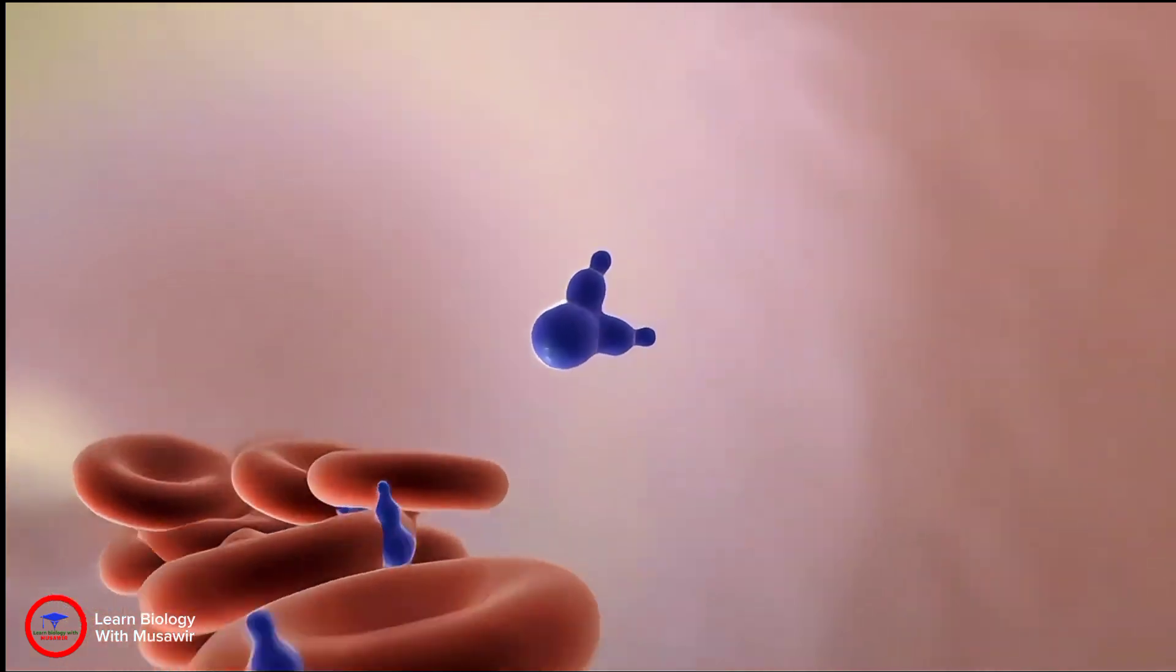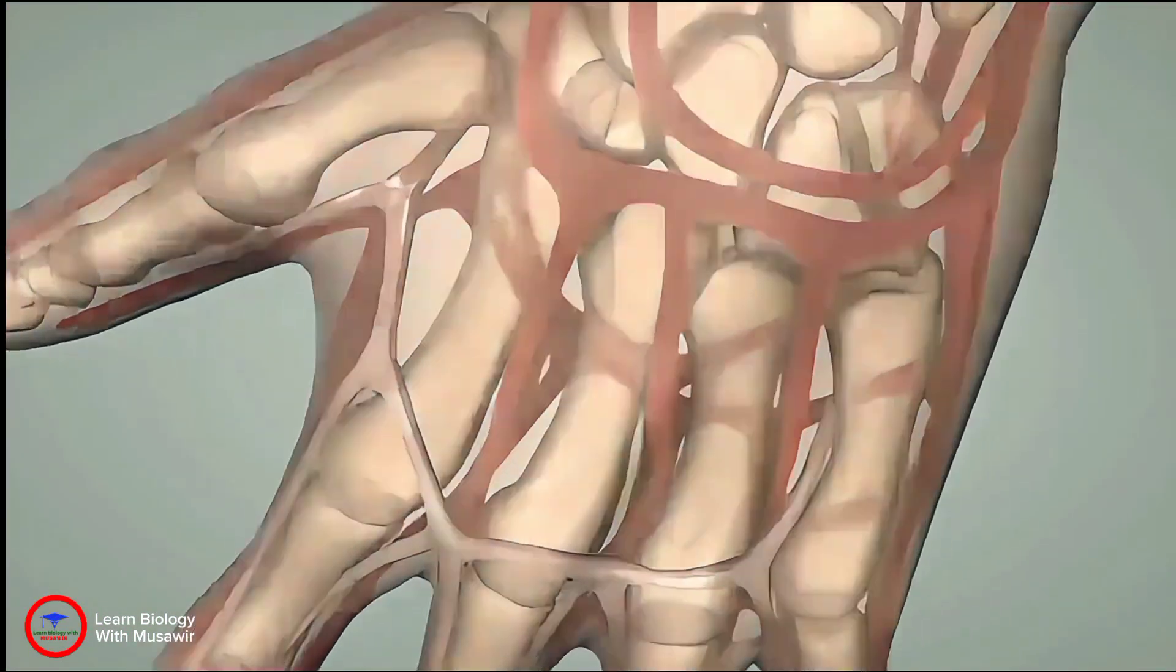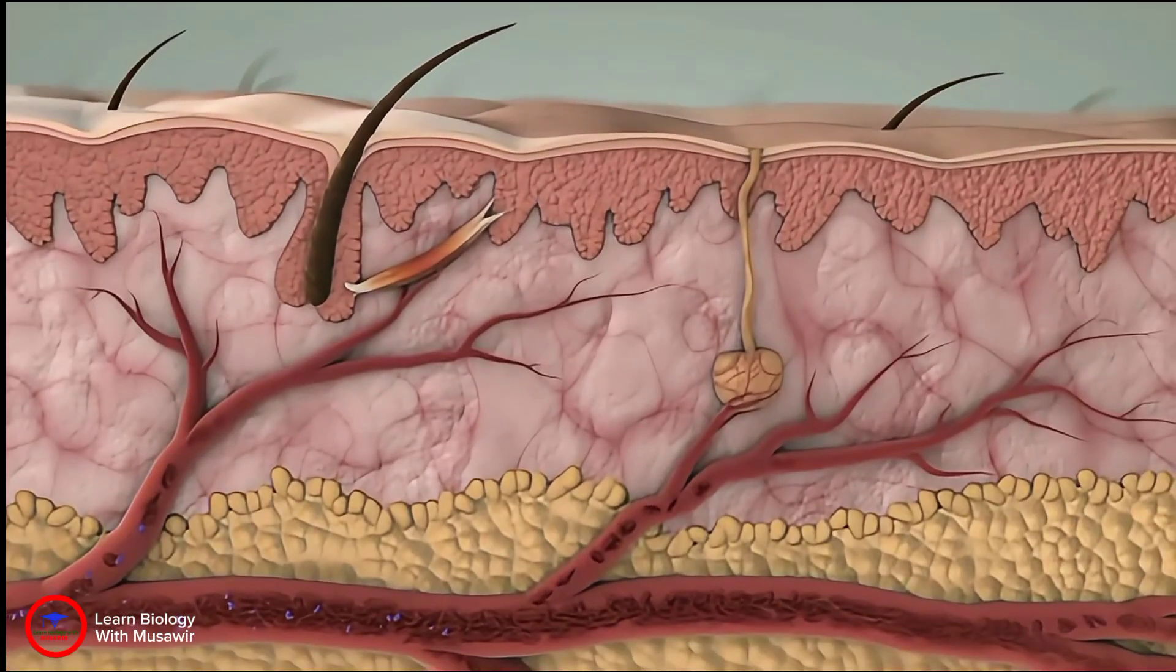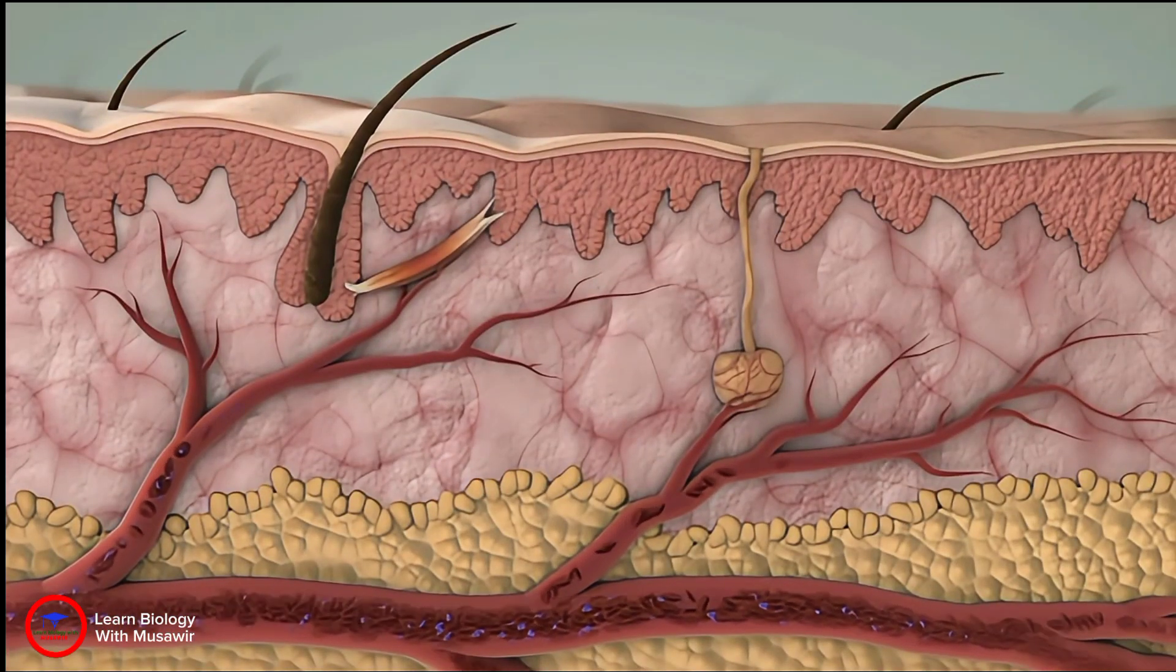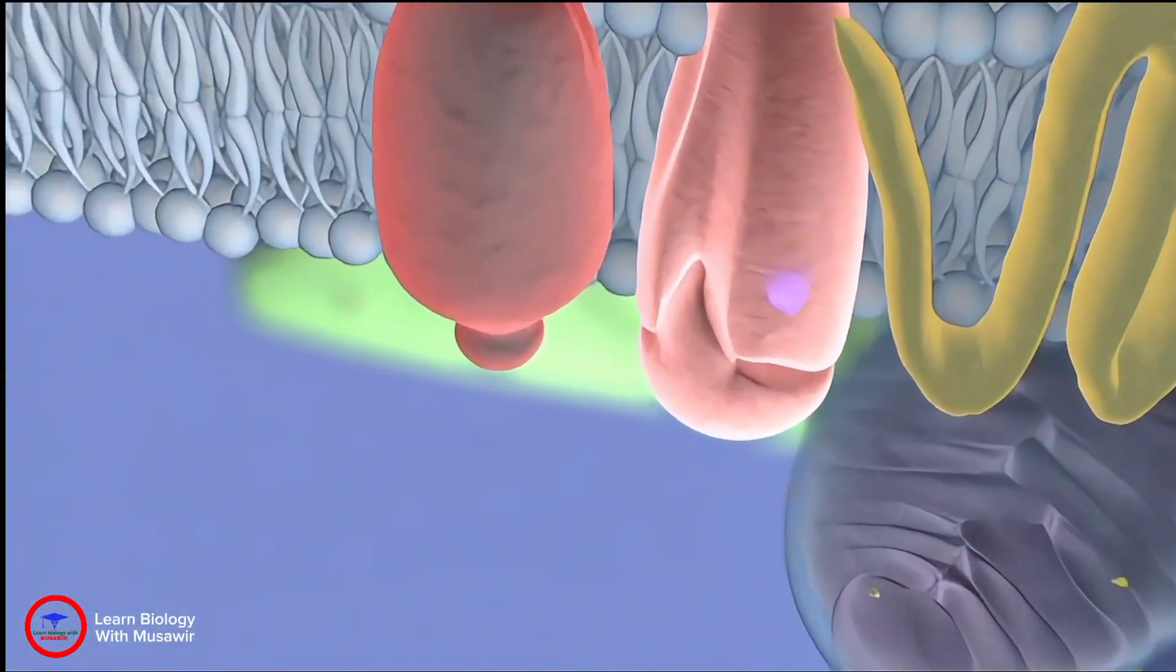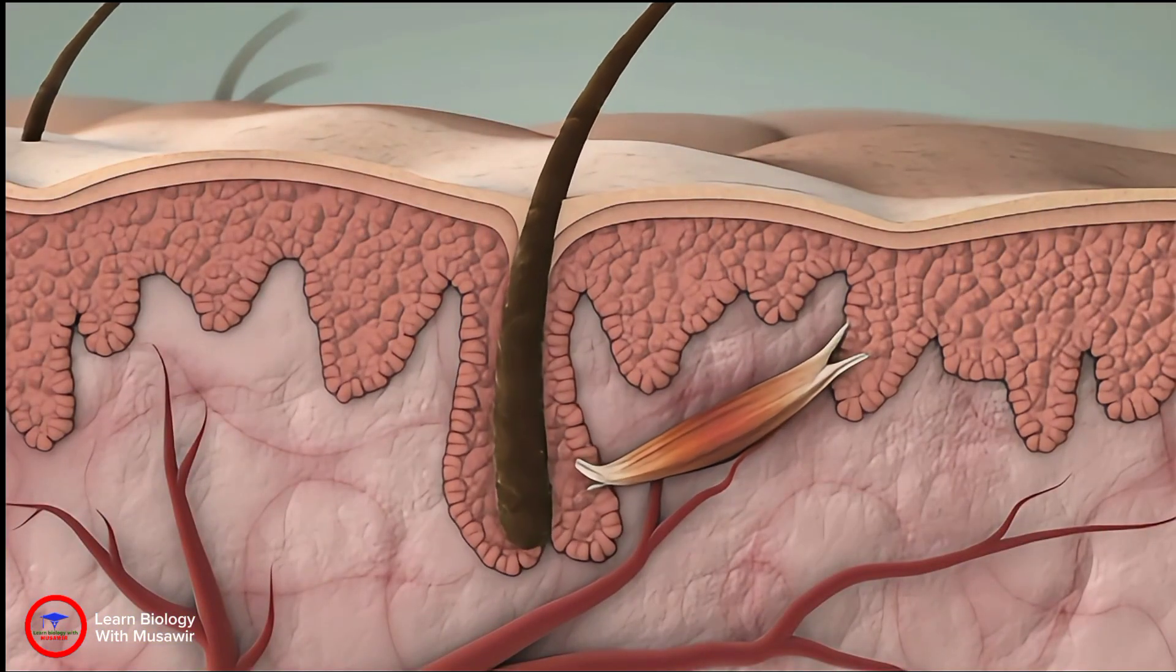This signaling molecule can relax or contract different types of muscle cells. When it reaches the skin, the signal docks on muscle cells attached to a body hair. The tiny muscle is stimulated to contract, raising the hair.